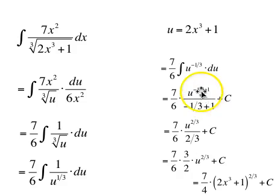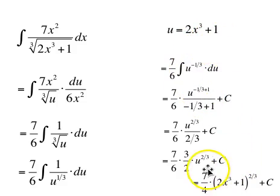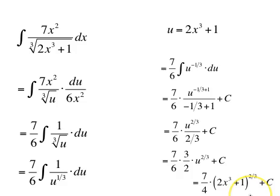But what is u? u is 2x cubed plus 1. We rewrite the final answer in terms of x, not u, and we get 7/4 times 2x cubed plus 1, all to the 2/3, plus c.